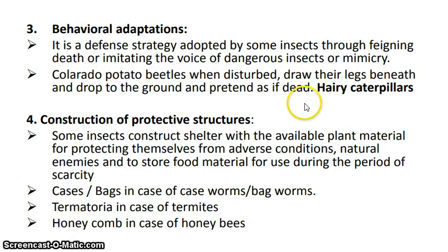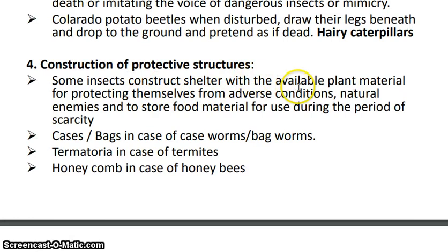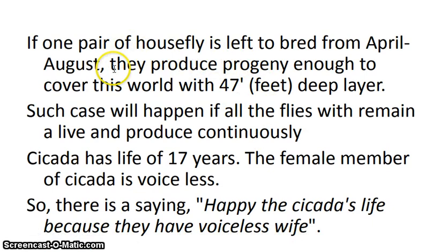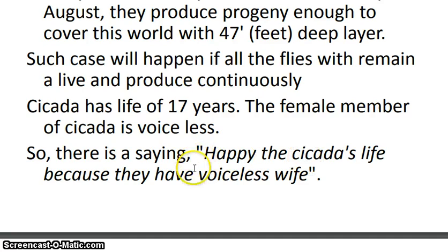Insects also construct protective structures using available plant material — cases or bags in bagworms, termitaria in termites, and honeycombs in honeybees. To illustrate reproductive potential, if a pair of house flies were allowed to breed from April to August and all survived, their progeny would be enough to cover the Earth to a depth of 47 feet. The cicada has a lifespan of 17 years, and the female is voiceless — leading to the joke that cicadas are happy because their wives are voiceless.